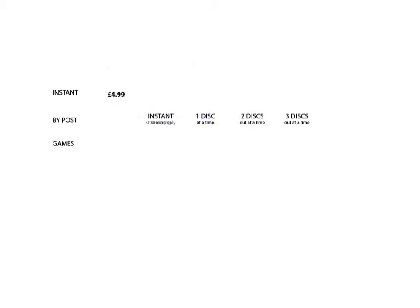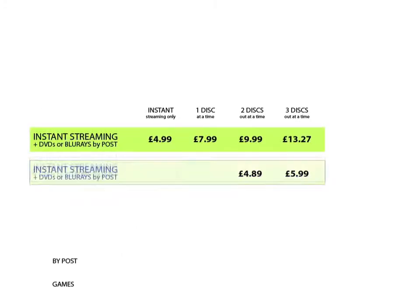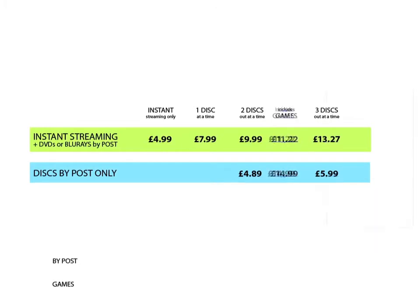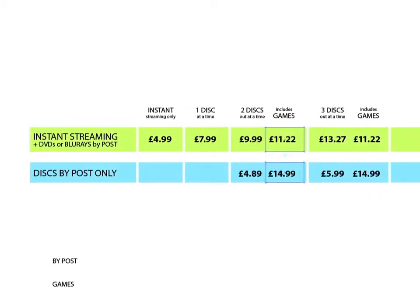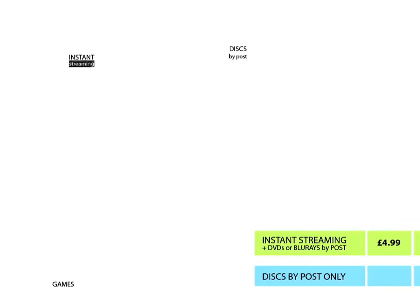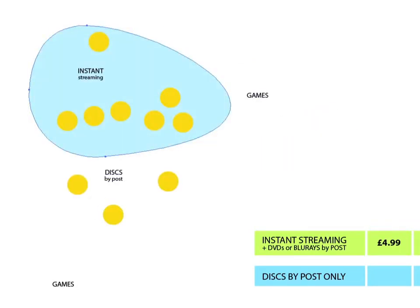Then I thought, maybe we can redefine how we present it as a different type of grid. So I tried looking at that. It's quite complicated. We've got quite different price points here, and getting the product clear wasn't easy, so I tried doing it as a Venn diagram. That wasn't very clear at all.